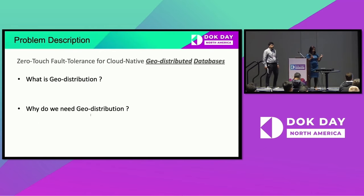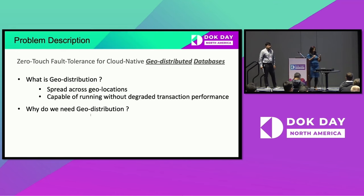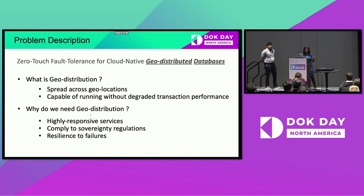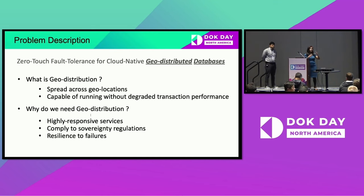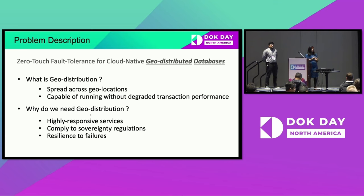What is Geodistribution? Simply defined, it is when your database is spread across two or more distinct geographical locations, in such a way that it's capable of operating without degraded transaction performance. The top three reasons we need it are: we want businesses to run highly responsive services, we want to move user data close to end users, we want to comply with sovereignty regulations, and most importantly, we want to be resilient to a wide variety of failures.